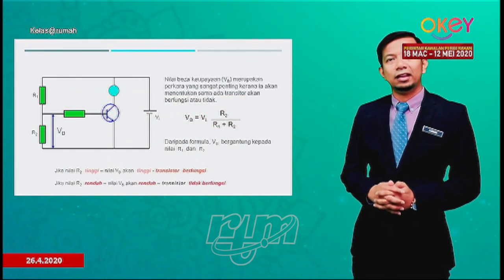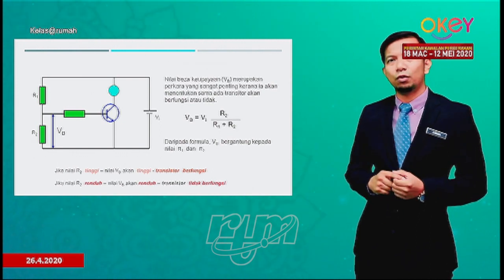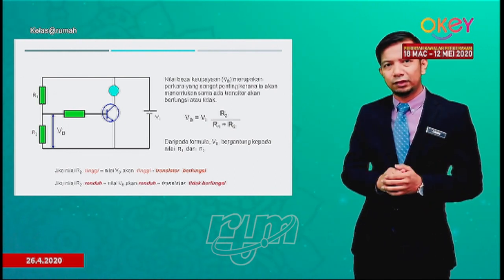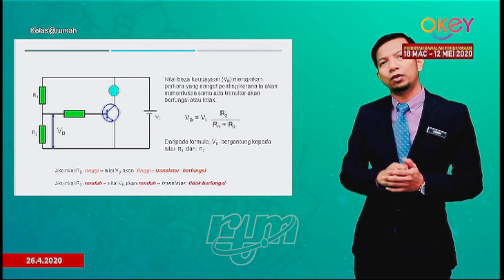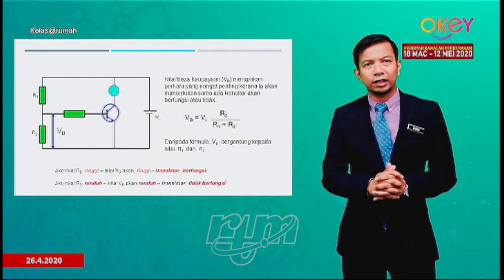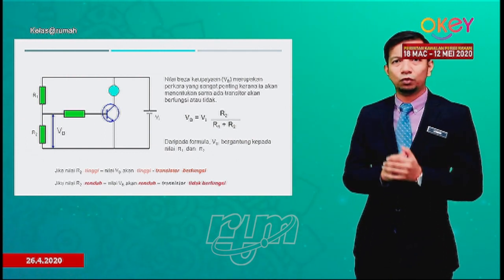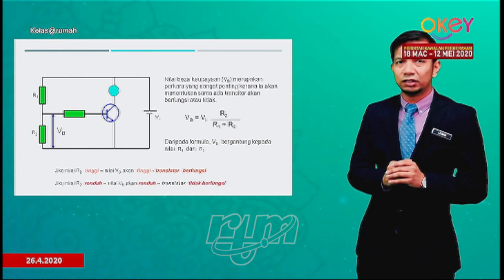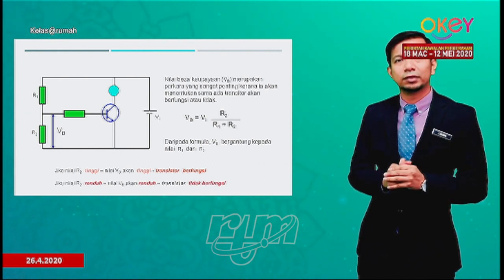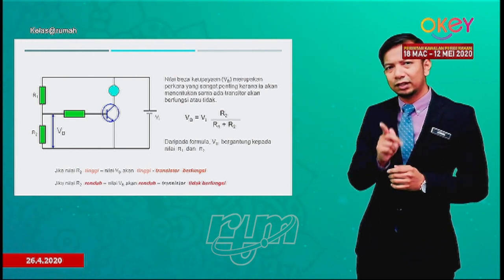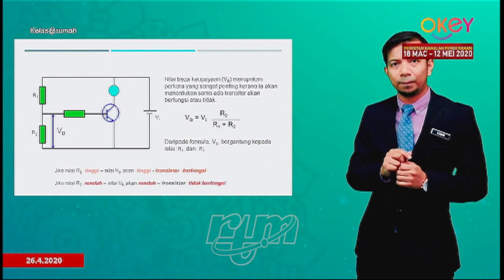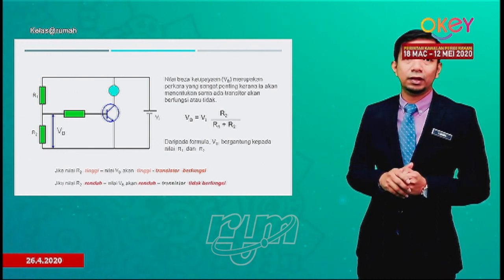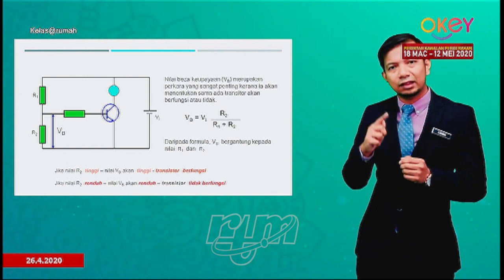Perkara yang paling penting dalam litar suis automatik ialah nilai VB. Jika nilai VB tinggi, baru litar boleh beroperasi. Daripada formula, VB dan R2 adalah berkadar terus: jika R2 besar, nilai VB juga besar. Apabila VB besar, nilai arus yang masuk ke terminal tapak adalah besar. Apabila nilai arus yang masuk ke terminal besar, transistor boleh berfungsi dan litar boleh beroperasi.